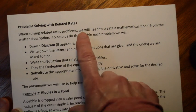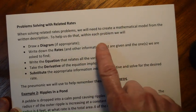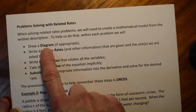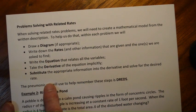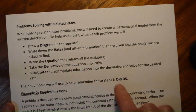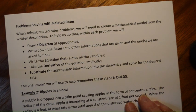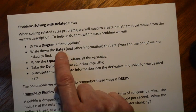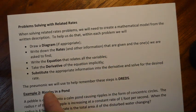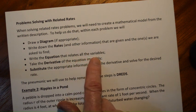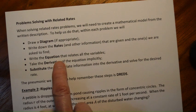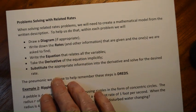When solving related rates we need to create a mathematical model from the written description. To help us do that, within each problem we will draw a diagram if it's appropriate. Sometimes we might be given a diagram, sometimes it doesn't call for one, but draw a diagram if appropriate. You should write down the rates and any other information that are given, and the ones we're asked to find — so in each problem we'll have a given and a find. Then write the equation that relates all the variables. In the cone example it was volume equals one-third pi r squared times h.